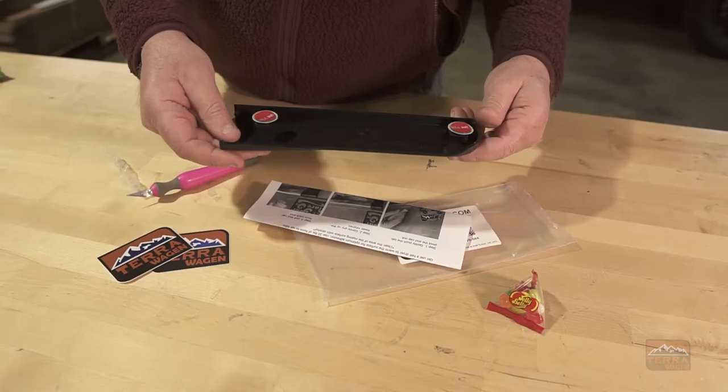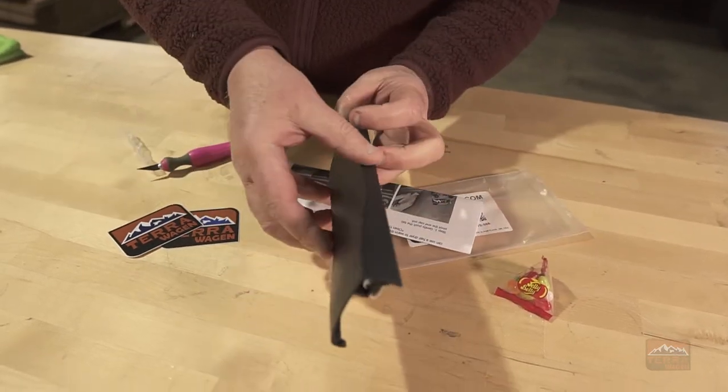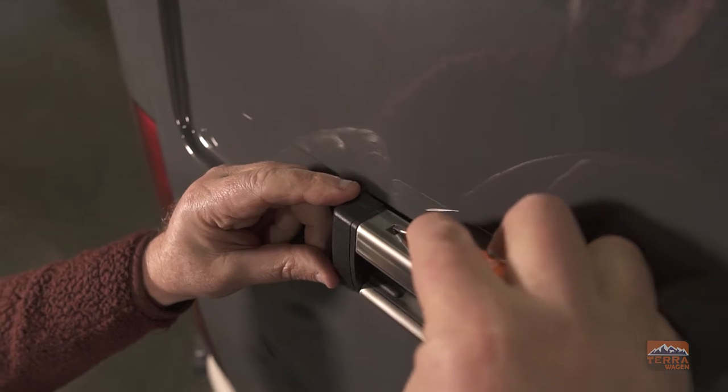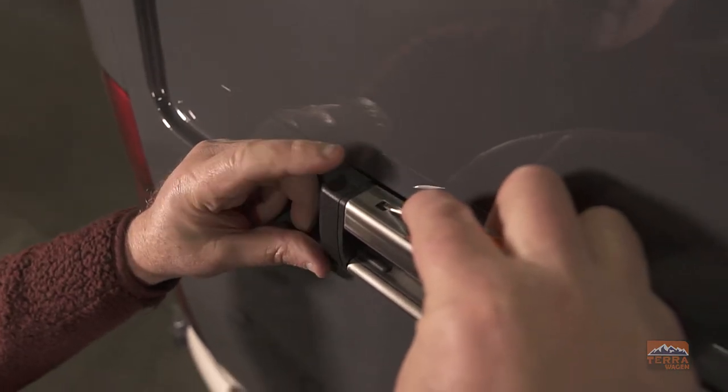Today we're installing our slider door track end trim. First, we need to remove the OEM end cap from the door rail.